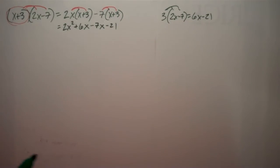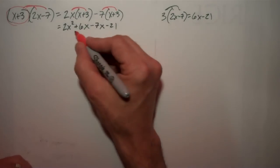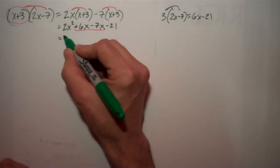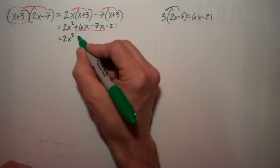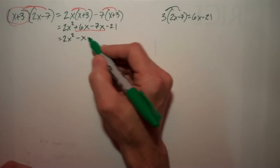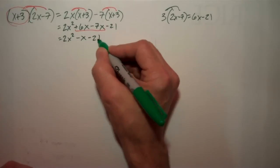And now, all I have to do is combine my like terms, and that's pretty simple. I have those x's there. So this is going to be 2x squared, minus x, because 6 minus 7 is negative 1, minus 21.